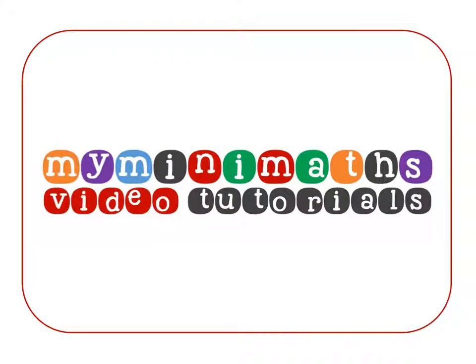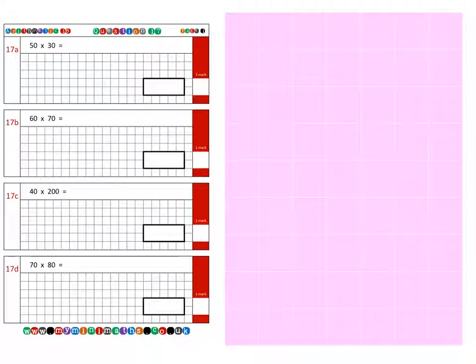Hello and welcome to today's myminimaths.co.uk video tutorial. Today we're going to be looking at the Arithmetic 16 question 17 practice question, which is multiplying multiples of 10 and 100 together.